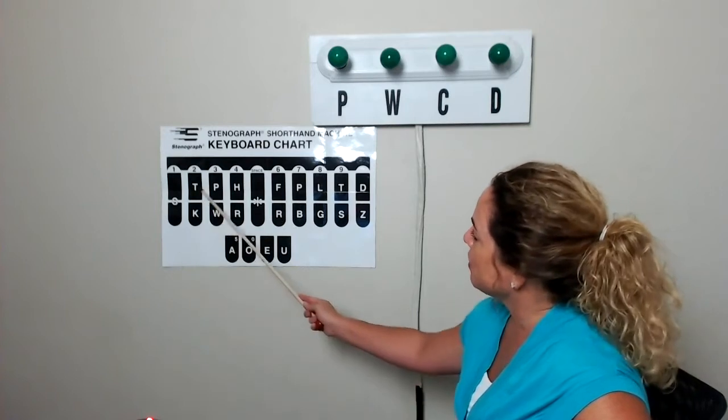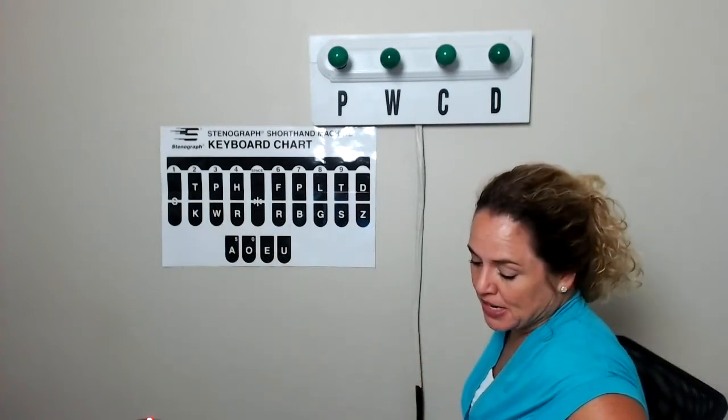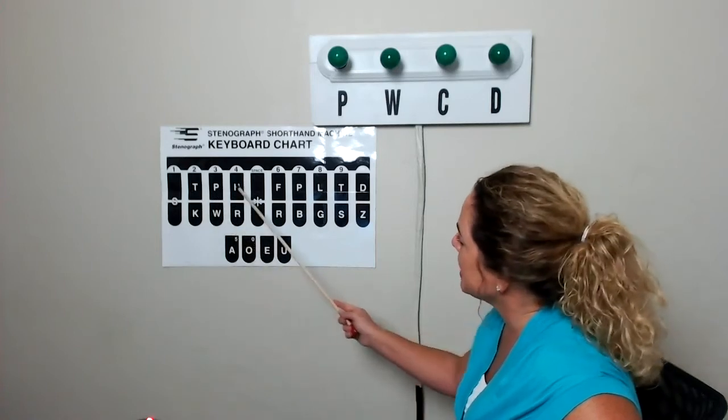Number five, neither. N, long E, R, T. Number six, possessive their. T, H, final R.